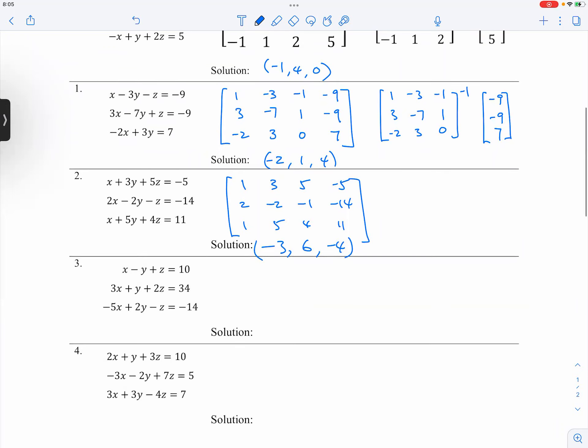And, of course, the inverse method would be one, three, five, and then two, negative two, negative one, one, five, four, and then inverse, and then negative five, negative 14, 11.